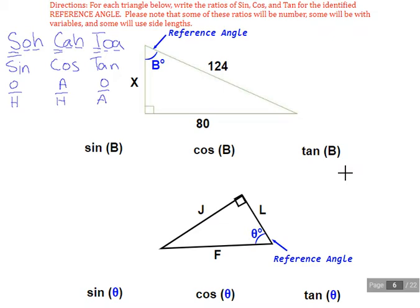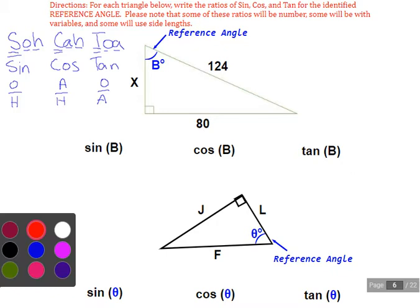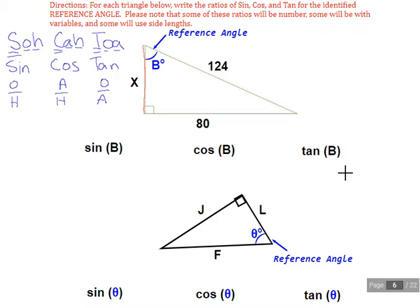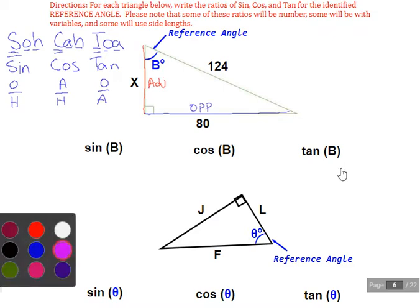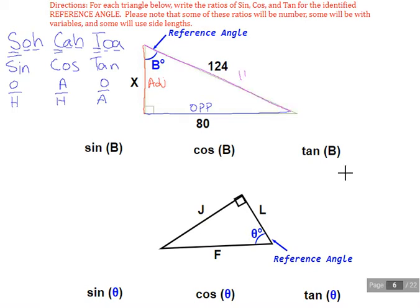Now, in terms of approaching this problem, we're not going to do much different than we have done in the past. The reference angle has been chosen for us, and so the next step is labeling our sides. So the one touching is going to be our adjacent, the one opposite is not touching, and our hypotenuse is going to be crossing the right angle, the longest side in the right triangle.